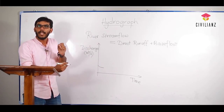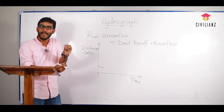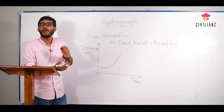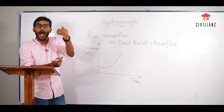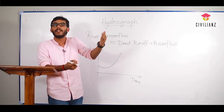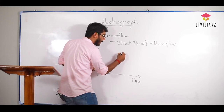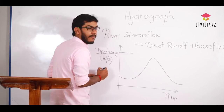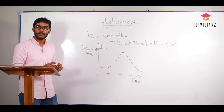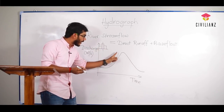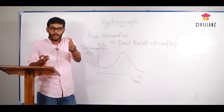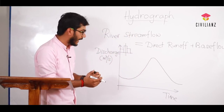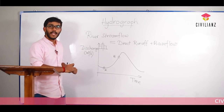As water flows faster, the discharge rises to a maximum level. The river stream flow reaches its maximum, and you can identify the peak point. There is always a time lag — when the direct runoff joins the river surface, there is a time gap, so the peak discharge occurs at a point after the rainfall input. There will be a peak at that point.